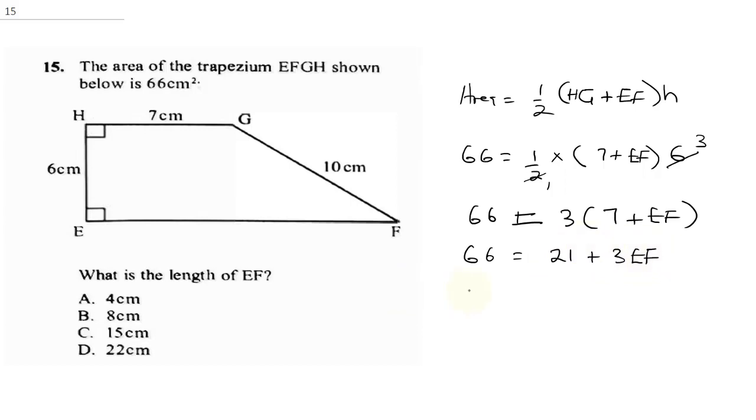So this means 66 would be, 3 times 7 is 21 plus 3 EF. So 66 minus 21 is equal to 3 EF. So 45 is equal to 3 EF. So EF is going to be 45 divided by 3, and that's going to give us 15 cm.